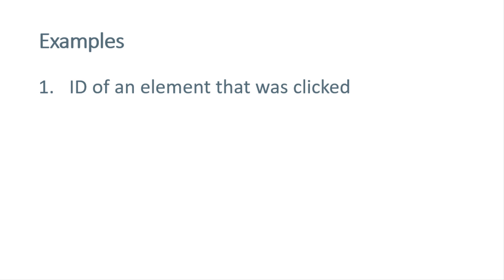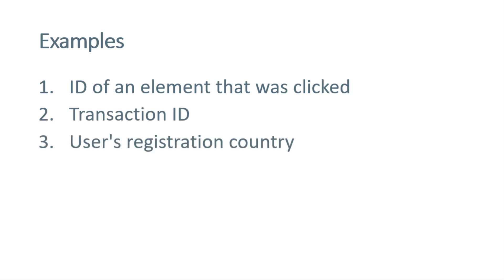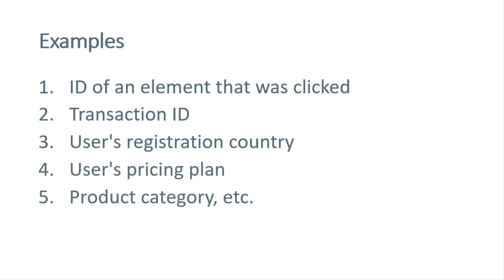Here are some examples. If you're tracking clicks of call-to-action buttons on your website, and every button has an ID, you can send that ID to Google Analytics. Then transaction ID is also a dimension. Another example is user registration country, user pricing plan, product category, and so on. These examples of dimensions apply to different items — the first applies to an event, the second to a purchase event, the third and fourth to a user, and the fifth to a product.